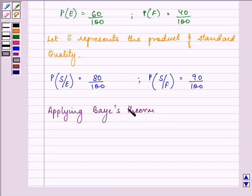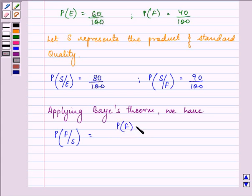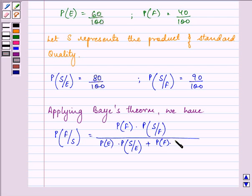Applying Bayes' theorem, we have to find out that the bicycle comes out from the second plant, that is F, and it is of standard quality. This we can find out by applying this formula. Probability of F into probability of S of F divided by probability of E into probability of S upon E plus probability of F into probability of S by F.